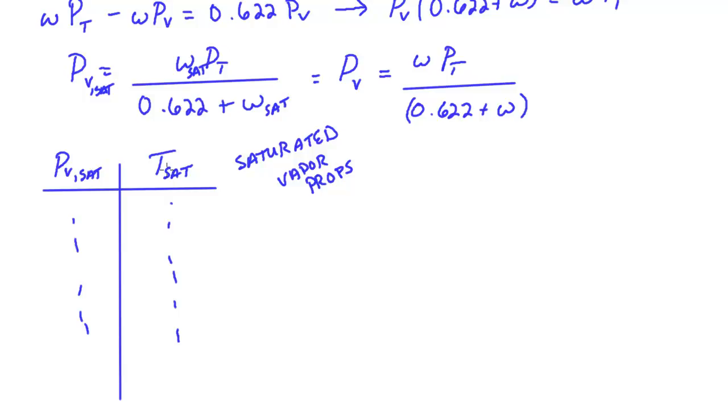and then we can come over to this table that is describing saturated vapor properties. And we go ahead and we go find where that pressure exists. And so as T sat goes up, the partial pressure at saturation goes up. And with that we can figure out whatever we would find in that table would be the dew point temperature.